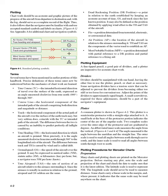True heading (TH): the horizontal direction in which an aircraft is pointed. More precisely, it is the angle measured clockwise from true north through 360 degrees to the longitudinal axis of the aircraft. The difference between track and TH is caused by wind and is called drift. Ground speed (GS): the speed of the aircraft over the ground.